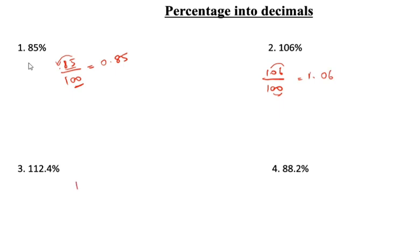Next one: 112.4 divided by 100. Percentage means divided by 100. There are 2 zeros, and the decimal point is already there, so you have to take from here — these 2 places. The answer is 1.124.